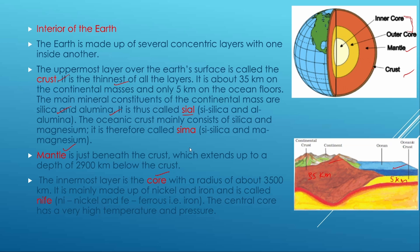The oceanic crust's main constituents are magnesium and silica, so it is called SIMA — SI for silica and MA for magnesium. The next layer is the mantle, which lies just beneath the crust and extends up to a depth of 2,900 kilometers. It is the second layer.